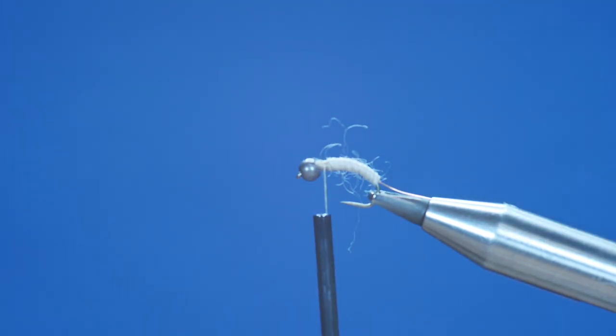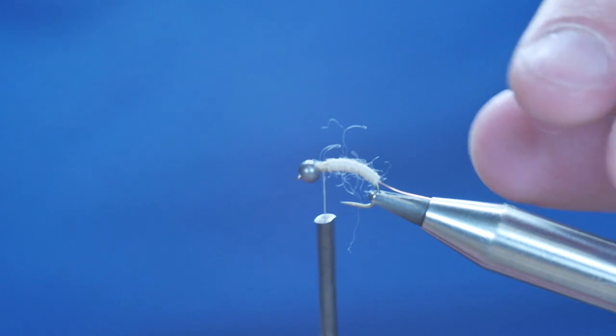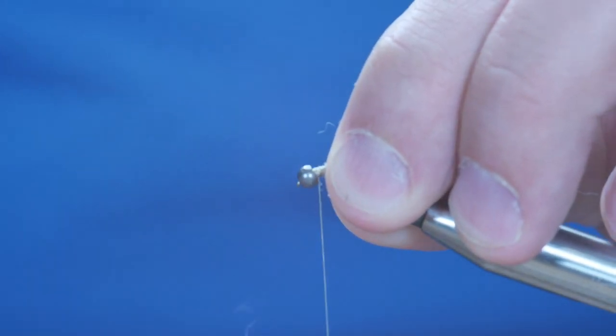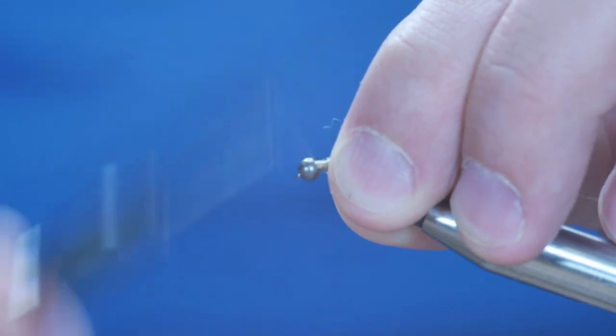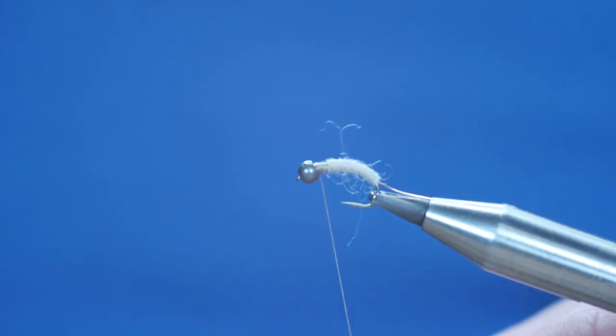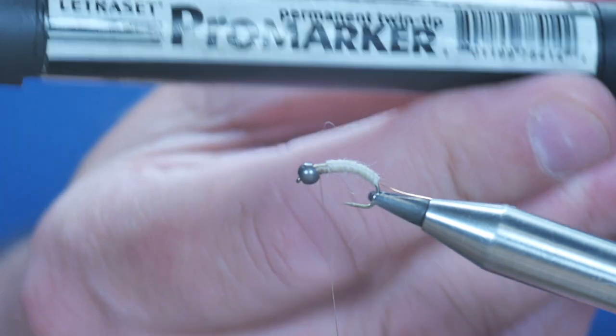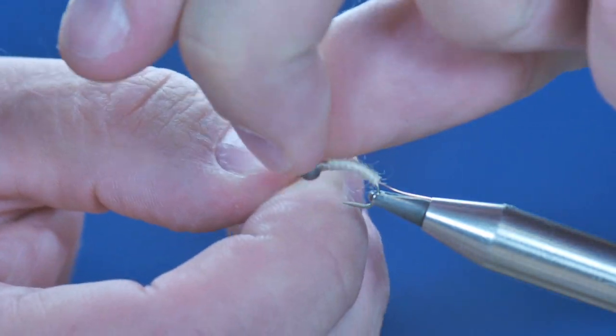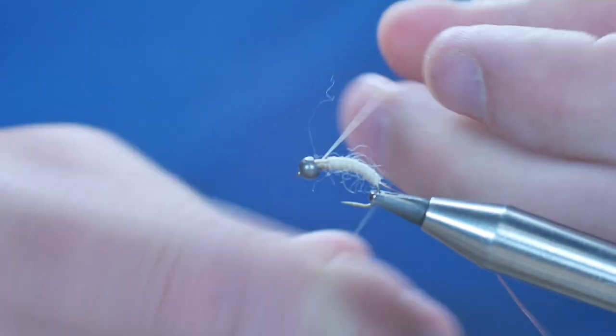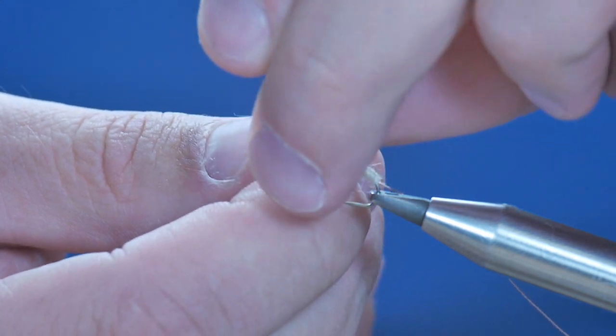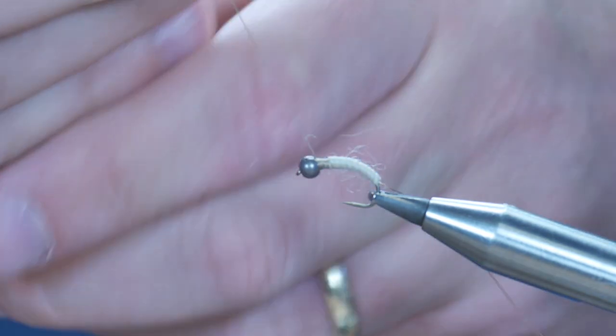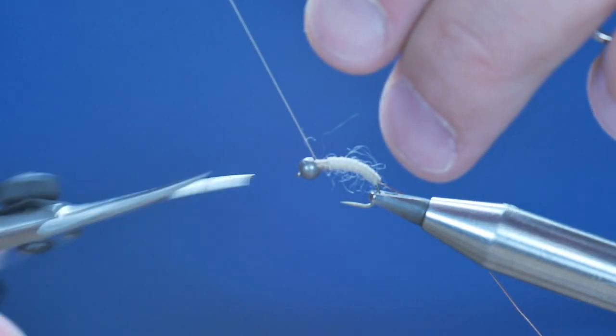Next, then, what I want to do is cast this thread off. Now if I was feeling particularly lazy, I would just use a black Sharpie marker and color my thread, but on this occasion I'm just going to change over.